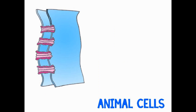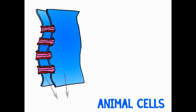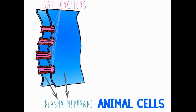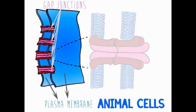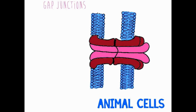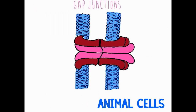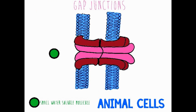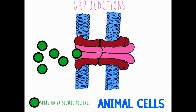In neighboring animal cells, there exists what we call gap junctions. These are found in the membranes of the cells and form channels. These channels allow inorganic ions and other small water-soluble molecules to pass directly from one cytoplasm to another between these cells.